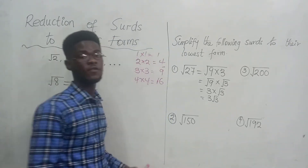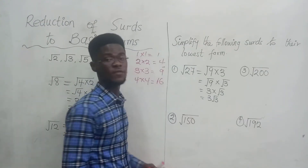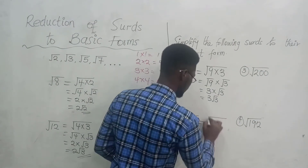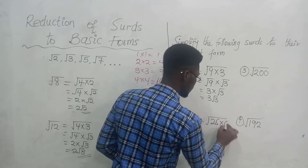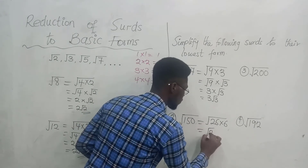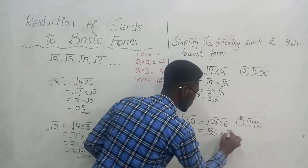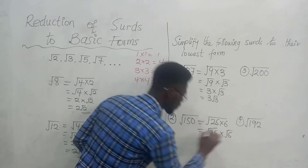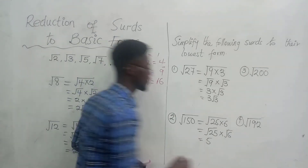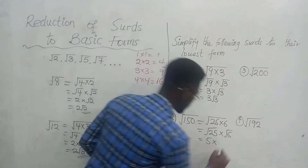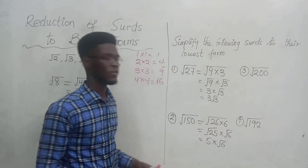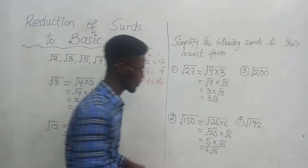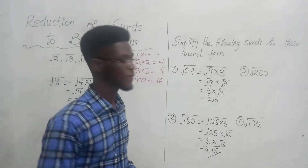Now the square root of 150. Which two numbers are we going to multiply to get 150? The two numbers are 25 and 6. Each of them picks the square root sign: square root of 25 times square root of 6. 25 is a perfect square, so the square root of 25 is 5. The square root of 6 is already in simplest form, so we can't do anything to it. This equals 5 root 6.